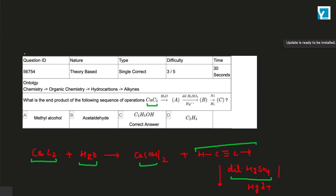We add hydrogen and get the corresponding alcohol product. So, option C will be the correct answer.